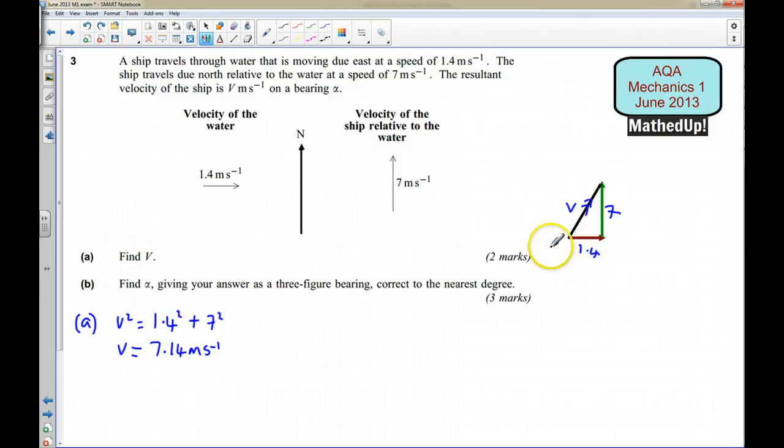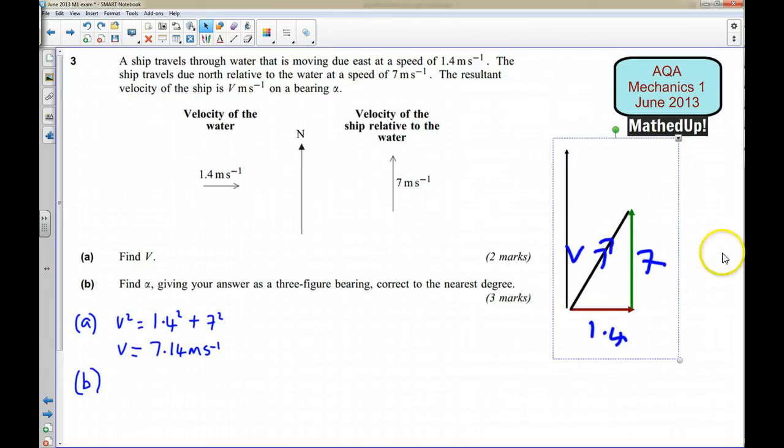For part B we want to find alpha and we need to give our answer as a three figure bearing. So our alpha is going to be, but if I just move this over here and put the north line in here, I'm just going to make this a little bit bigger. And now alpha is this here. We're trying to find this angle here, so we'll call that alpha. But in order to work that out, what we need is we need to know what this angle here is. So this angle here I'm going to call theta.